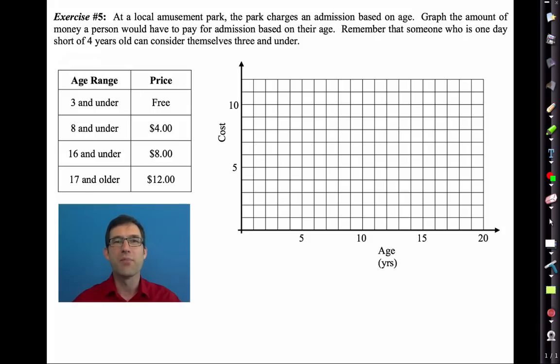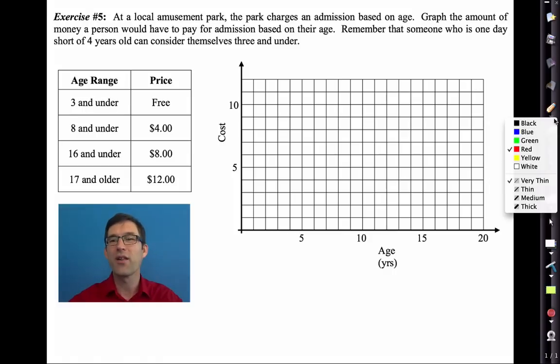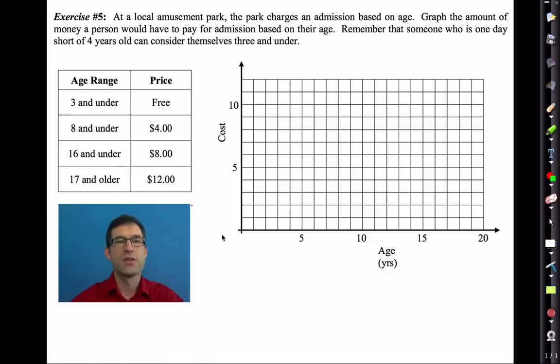At a local amusement park the park charges an admission based on age. Graph the amount of money a person would have to pay for admission based on their age. Remember that someone who is one day short of four years old can still consider themselves three and under. So this is really kind of cool. And there's a little red dot. All right.